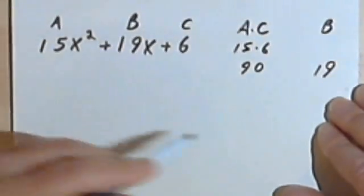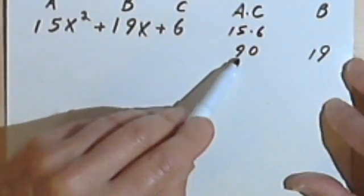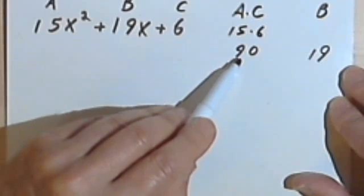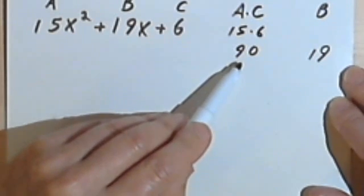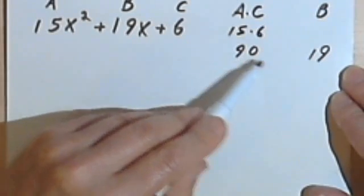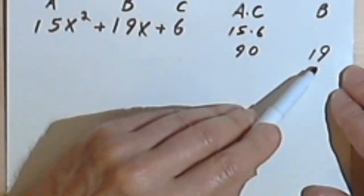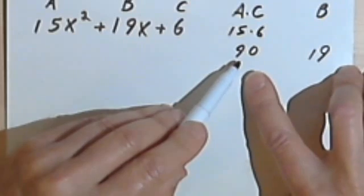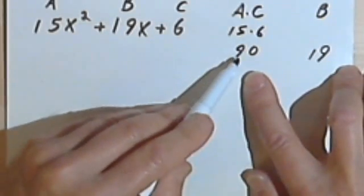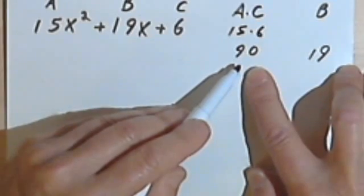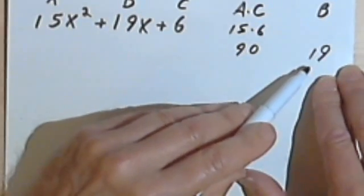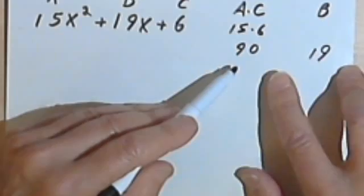Now what I'm going to do is find factors of 90, pairs of two numbers, that when I add them together will give me 19. Because 90 was positive, it was 15 times 6, I know that I want either two positive numbers or two negative numbers. And since 19 is positive, I want two positive numbers.